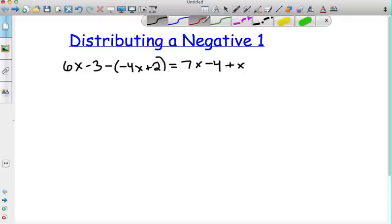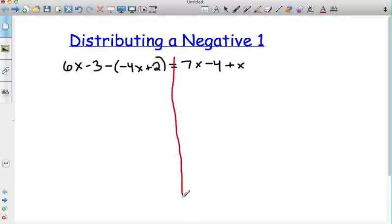Now distributing a negative 1 is one of the common errors that I see as people start to try to solve these types of problems. When we look at order of operations, we want to make sure we get rid of these parentheses. The big thing that's different here is this negative right in the front.